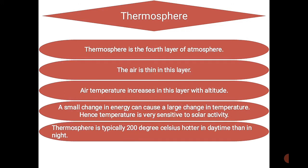The thermosphere is the fourth and last layer according to temperature variations. The air is thin in this layer and air temperature increases with altitude, going up to 1200 degrees Celsius. In the mesosphere, temperature was minus 92 degrees Celsius. A small change in energy can cause a large change in temperature in this region, making temperature very sensitive to solar activity. The thermosphere is typically 200 degrees Celsius hotter in daytime than nighttime.